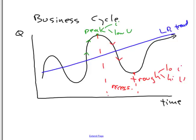The blue line represents the long-run trend growth of the economy, but there's a lot of fluctuation around it, and that fluctuation is called the business cycle.